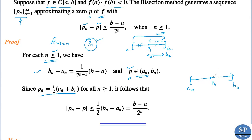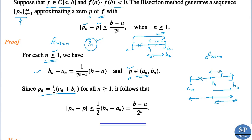Since pn = (an + bn)/2, if p, the actual root of f(x) = 0, lies in one subinterval we ignore the other. The absolute value |pn - p| is the distance between pn and p, which is less than or equal to (1/2)·(bn - an). So we have |pn - p| ≤ (1/2)·(bn - an) for any n ≥ 1.